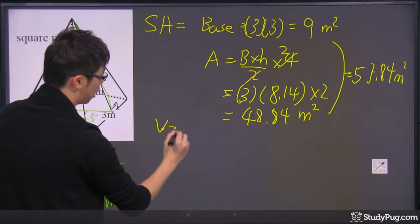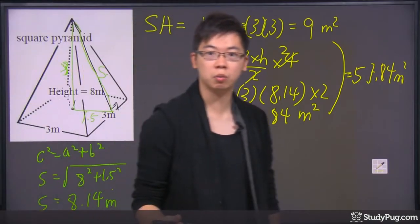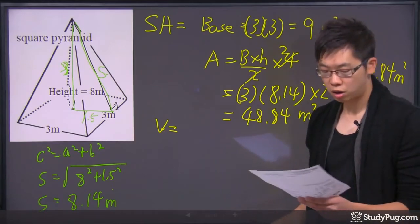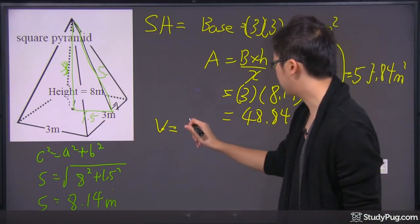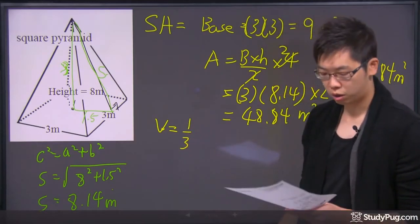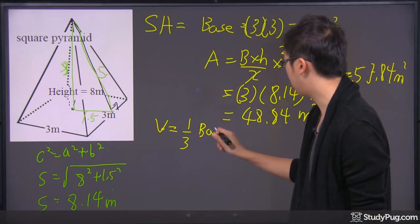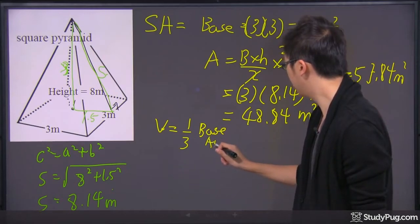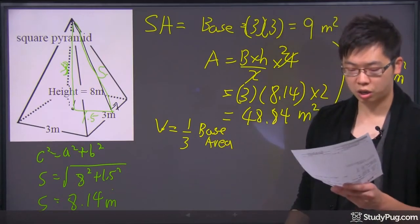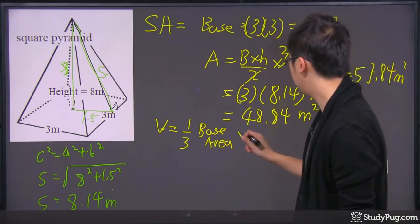So, I'm going to do the volume, and we do have an equation for the volume. For any pyramid, if you're going to do the volume, it's actually just 1 third times the area of the base, the base area, and we're going to times it by the height.